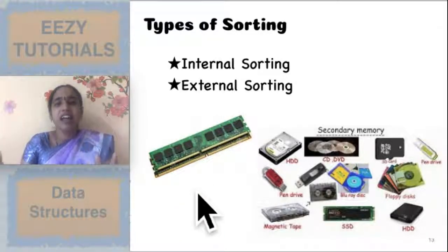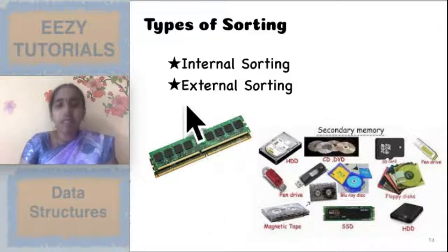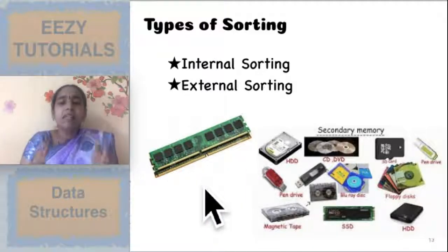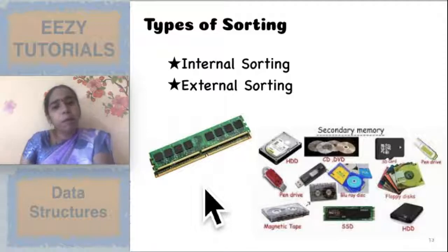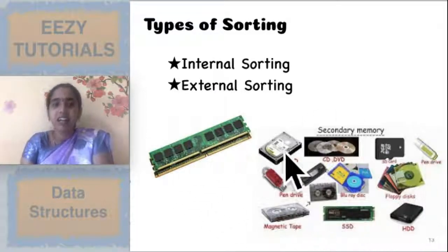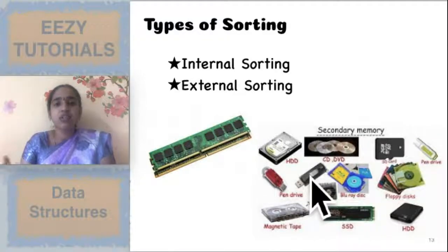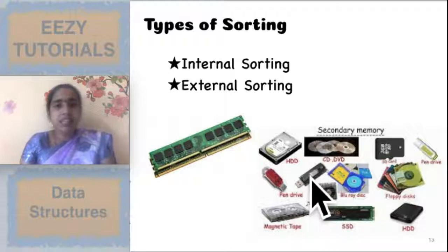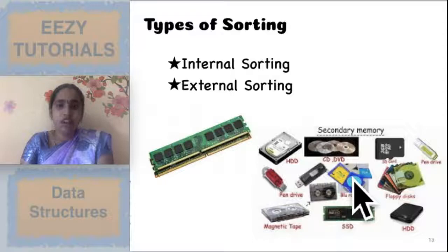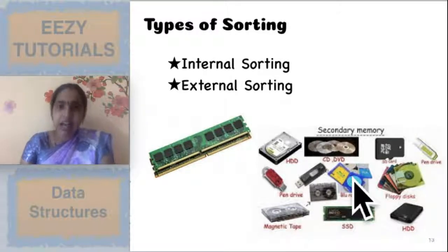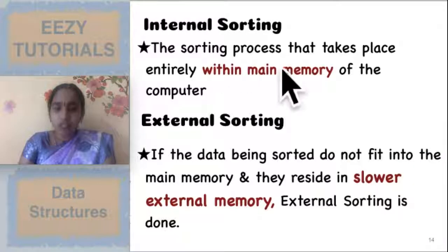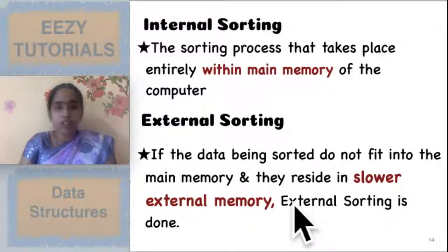Suppose the size of the data is very large and the entire data cannot fit in the main memory, you'll be splitting the data and placing it in secondary or external storage devices like pen drives, external hard disks, CDs, or flash cards. If you are using external storage devices for keeping your data to be sorted, then we use external sorting.